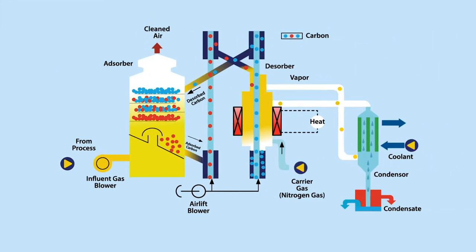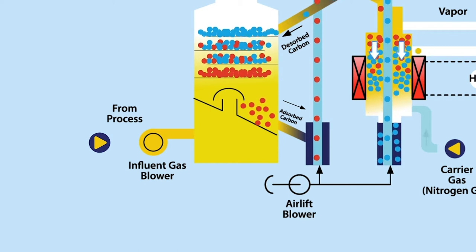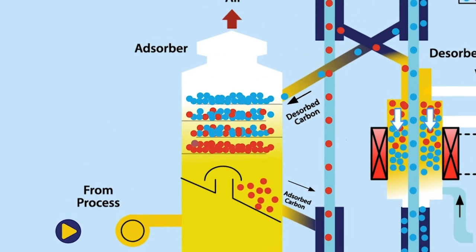Now let's look inside. Processed air containing emissions enters the adsorber. It passes up through a series of trays filled with activated carbon beads.